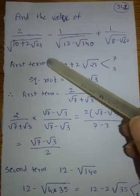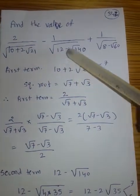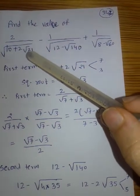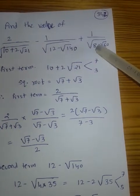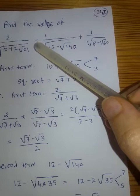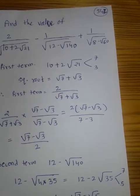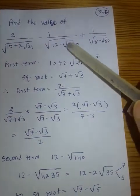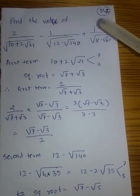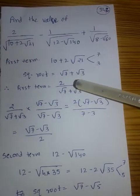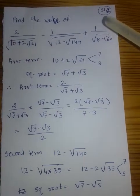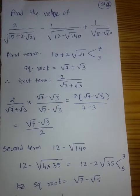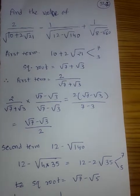Let's solve one more sum. Here you can see there are three terms. I am going to simplify the first term, then the second term, then the third term, and then take care of the minus and plus signs. That way it will be very easy. What I suggest: first you pause the video, try to solve it on your own, and then match your answer with mine.